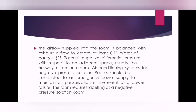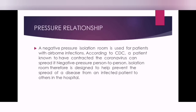The air conditioning system for a negative pressure isolation room should be connected to an emergency power supply to maintain air pressurization in the event of power failure. It is also recommended that this room must be labeled as a 'Negative Pressure Isolation Room' so other persons know what type of room it is. Now we will discuss in detail about the pressure relationship.